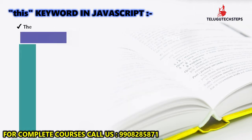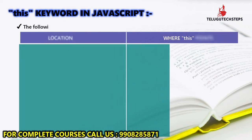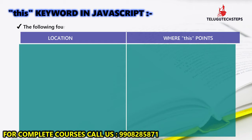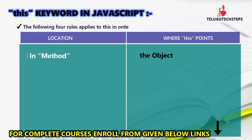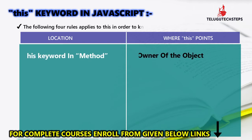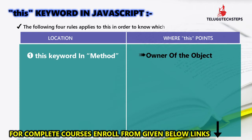Let us see the third point. You can find this on YouTube or Google. If you understand this table, you can understand this keyword. So, 'this' keyword points to a particular object in particular scenarios. When used in a method, 'this' indicates the owner of the object.